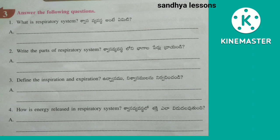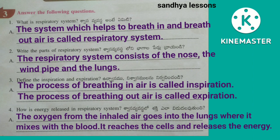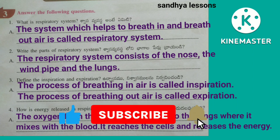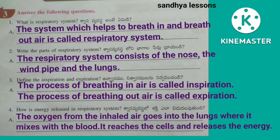Third, answer the following questions. First question: What is the respiratory system? The system which helps to breathe in and breathe out air is called the respiratory system. Second question: Write the parts of the respiratory system. The respiratory system consists of the nose, the windpipe, and the lungs.